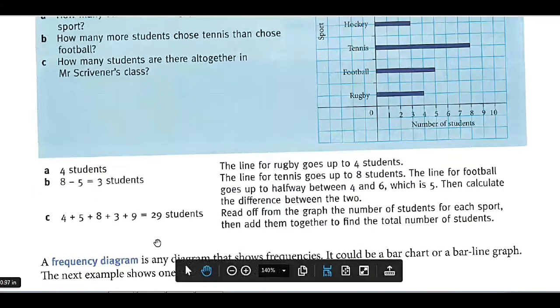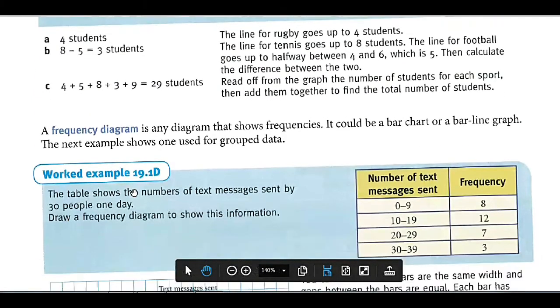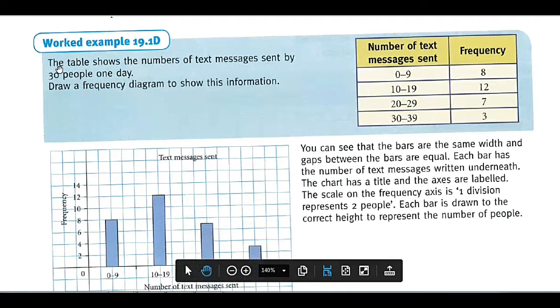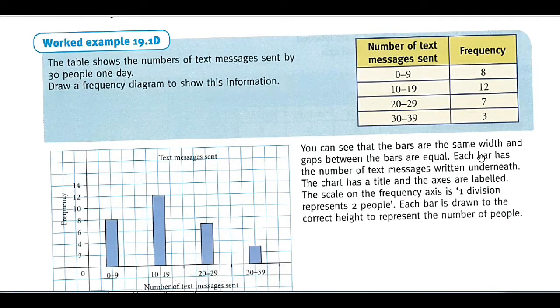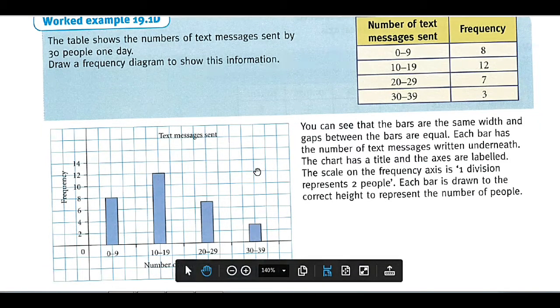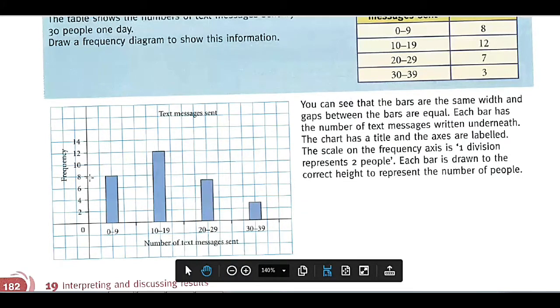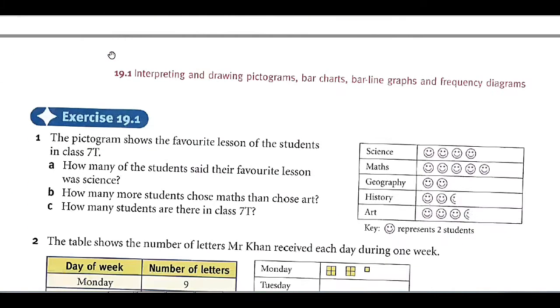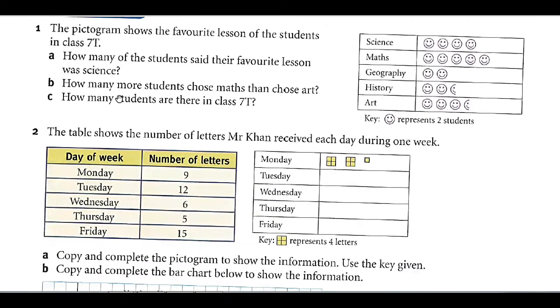Frequency diagram is like that. Here you will see: draw the frequency diagram to show this information. The number of text messages sent. What will we write here? The number of text messages and the frequency. How many people sent 0 to 9? That is 8. 10 to 19? That is 12. 20 to 29? That is 7. Here is your frequency table or diagram. With the help of this, we are just solving our 9.1.